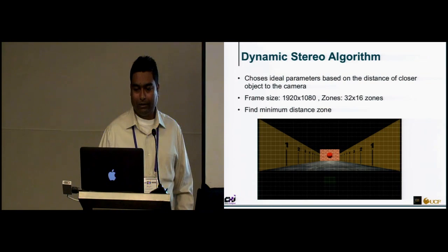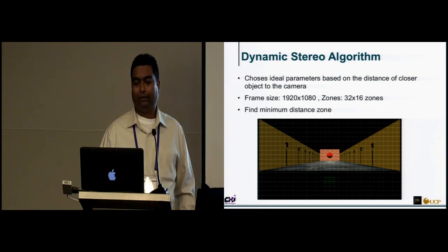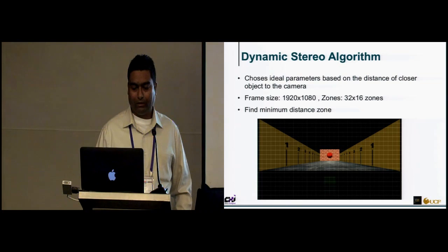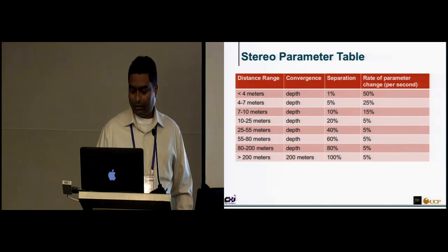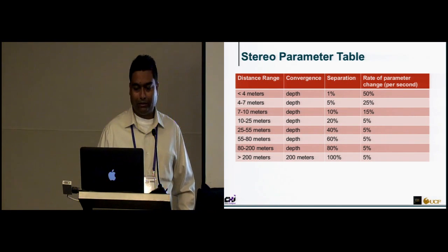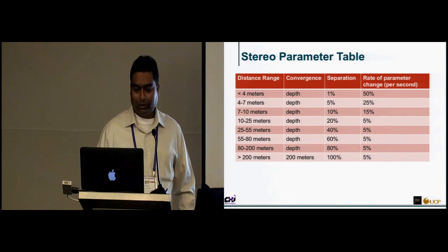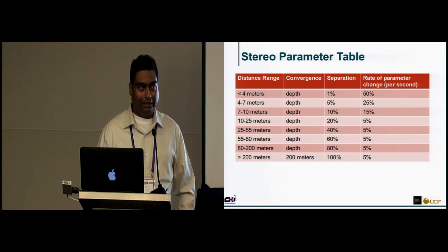Our first algorithm is dynamic stereo without eye tracking. It chooses ideal parameters based on the distance of the closest object to the camera. We divide the scene into different zones, calculate the distance from the camera at the center of each zone, and choose the minimum value to find the closest object. Based on user studies, we calculated a table of separation and convergence values for different distances, including how fast to change them. When there are closer objects, parameters must change very fast to avoid excessive disparity.